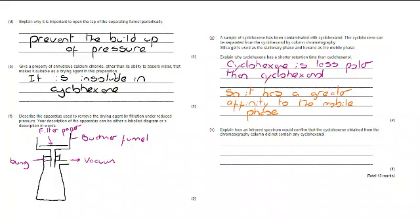And finally, a little bit of organic analysis here. Explain how an infrared spectrum could confirm the cyclohexene did not contain any cyclohexanol. So on infrared, we're thinking about some of the key peaks. Remember, you're provided with this data on the back of the periodic table or in your data book. There wouldn't be a peak at 3230 to 3550 if there was no cyclohexanol.